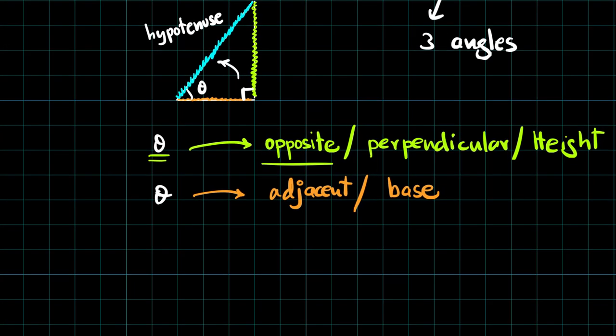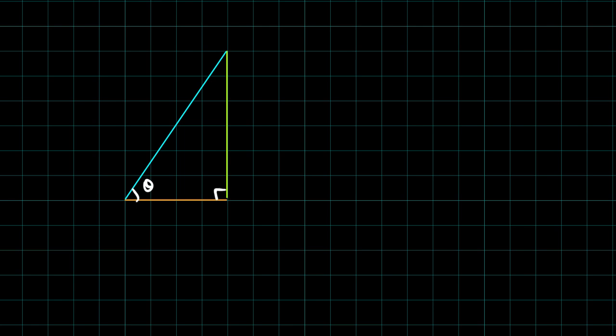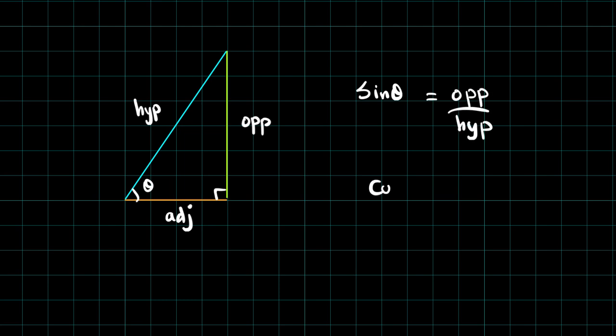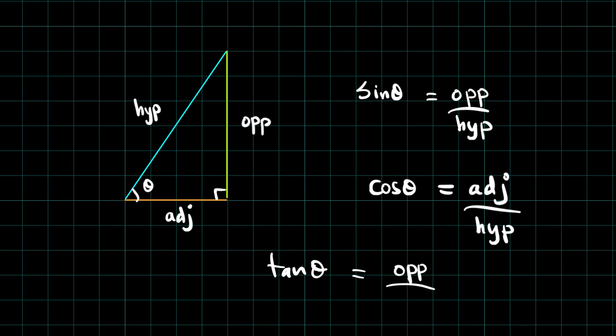Now we know the basic trigonometric ratios, so let me draw another triangle. This time I label the adjacent side with orange color, the green color for the perpendicular, and the blue color for the hypotenuse. Let me label this angle as theta. This is 90 degrees. This is opposite. This is adjacent. This is hypotenuse. What is sine of theta? That is opposite over hypotenuse. What is cosine of theta? That is adjacent over hypotenuse. And tangent of theta is opposite over adjacent.